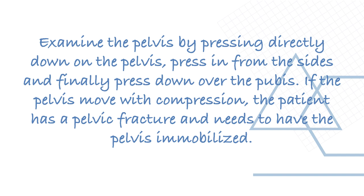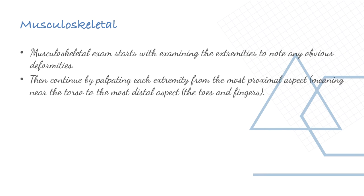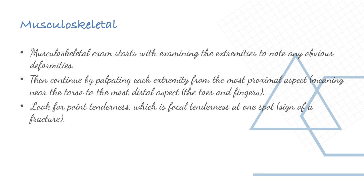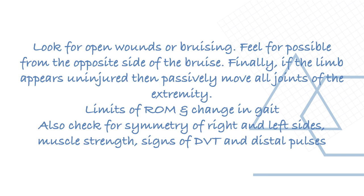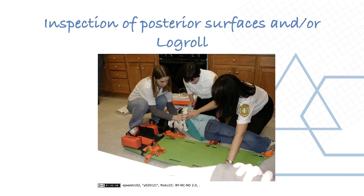For musculoskeletal assessment, examine the extremities for obvious deformities, then palpate each extremity from the most proximal aspect to the most distal. Look for point tenderness — focal tenderness at one spot — which can be a sign of a fracture. Look for open wounds or bruising. If the limb appears uninjured, passively move all joints. Also assess limits of range of motion, change in gait, symmetry of right and left sides, muscle strength, size of deep vein thrombosis, and distal pulses. Inspect the posterior surface using log roll technique.